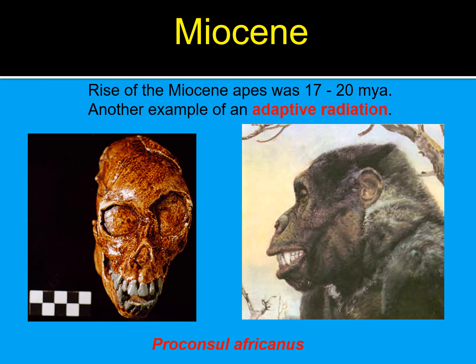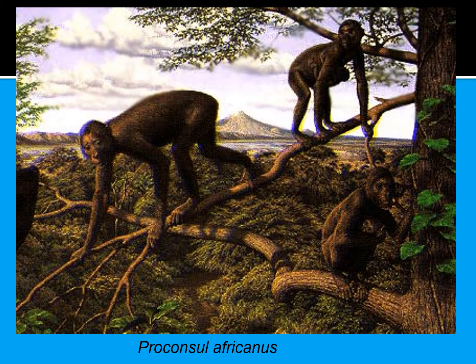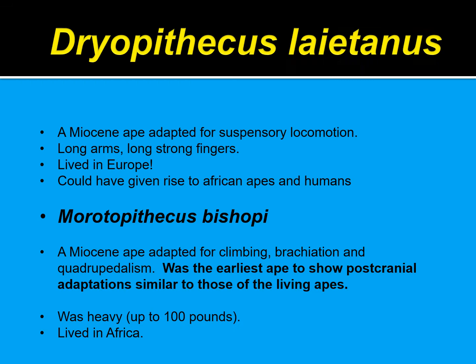Some things to remember: during the Miocene, this is what we call the rise of the Miocene apes, between 17 to 20 million years ago — another great example of adaptive radiation. Proconsul africanus had a fairly intact skull allowing a good reconstruction. Dryopithecus laetanus was a Miocene ape adapted for suspensory locomotion with very long and strong fingers, lived in Europe, and could have given rise to African apes as well as humans. Morotopithecus bishopi is another Miocene ape adapted for climbing, brachiation, and quadrupedalism — the earliest ape to show post-cranial adaptations similar to living apes, weighing up to 100 pounds and living in Africa.